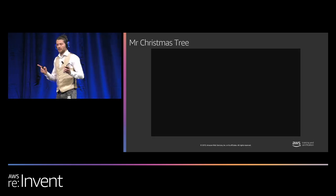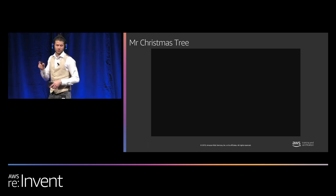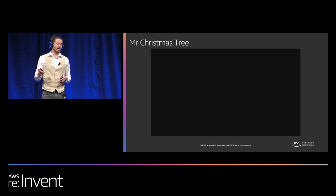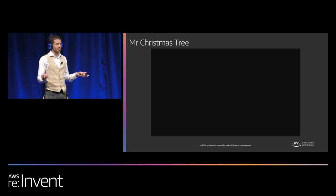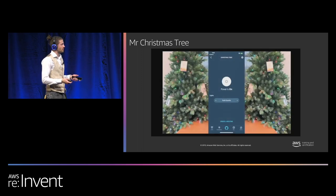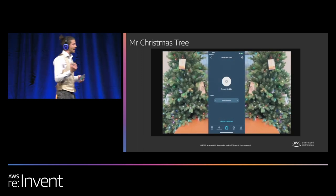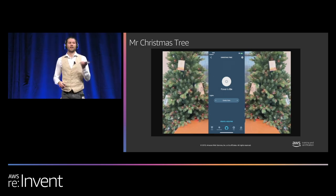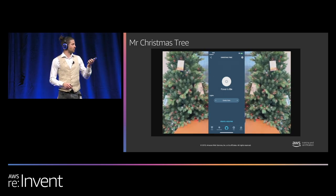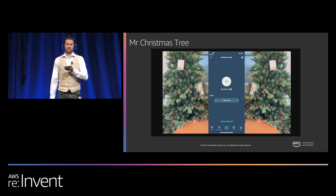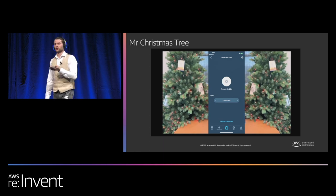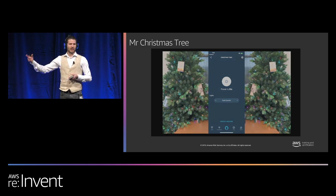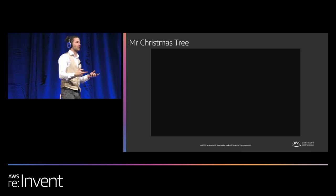Now let's look at the Christmas tree example that Mohamed brought up earlier. This is my Christmas tree sitting back in my office — and that's me on my Alexa mobile app. I'm actually saying Alexa, set Christmas tree to candy cane, and it's changing the mode settings of the lights.